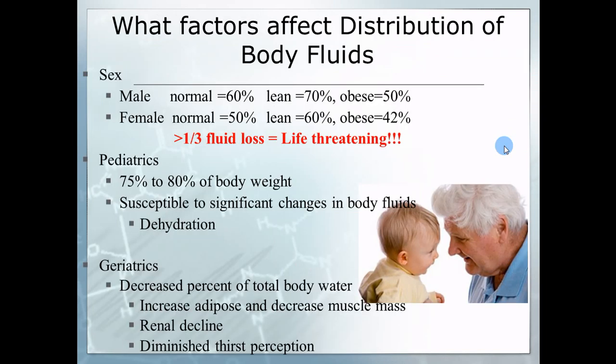Major factors that affect the distribution: the first is sex. A normal male is about 60% water, a normal female about 50%. A lean male is 70% water, a lean female 60%. But look at obese — as they gained fat, what happened to their water concentration? It went down. When you gain fat, you lose water because fat and water don't get along. The more fat you have in your body, the less water you hold, which means you get dehydrated more easily.